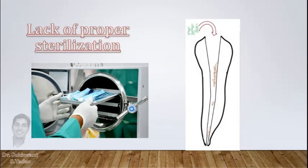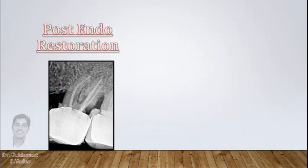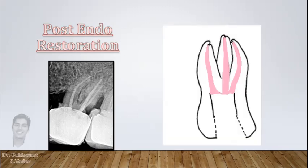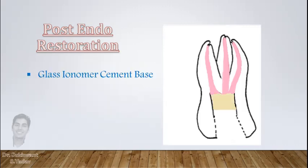Many times dentists focus on the endo but fail to provide a tight coronal seal. Leakage in post-endo restoration is a major cause of root canal failure. I recommend using the sandwich technique — a base of glass ionomer cement in the pulp chamber followed by composite over it.